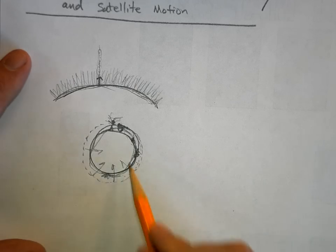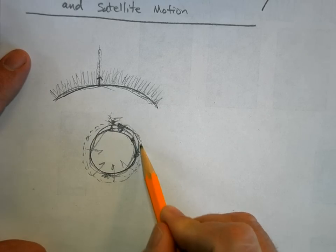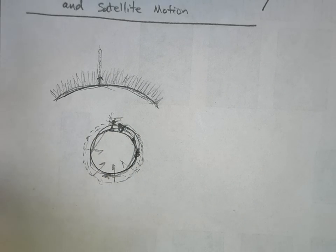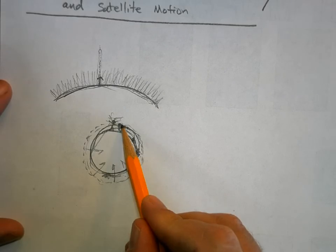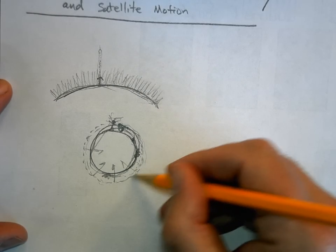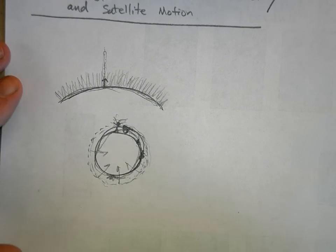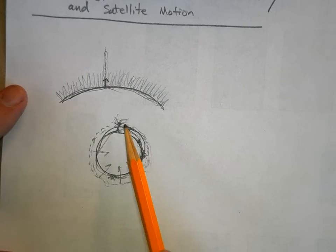If the cannonball comes out fast enough and I duck, it will continue to circle the Earth forever. You can't do this near the surface because the atmosphere slows the object enough for gravity to pull it down. But on the tallest mountain on the Moon, with no atmosphere, you could literally shoot a cannonball and it would skim the surface and stay in orbit around the Moon for a long time.